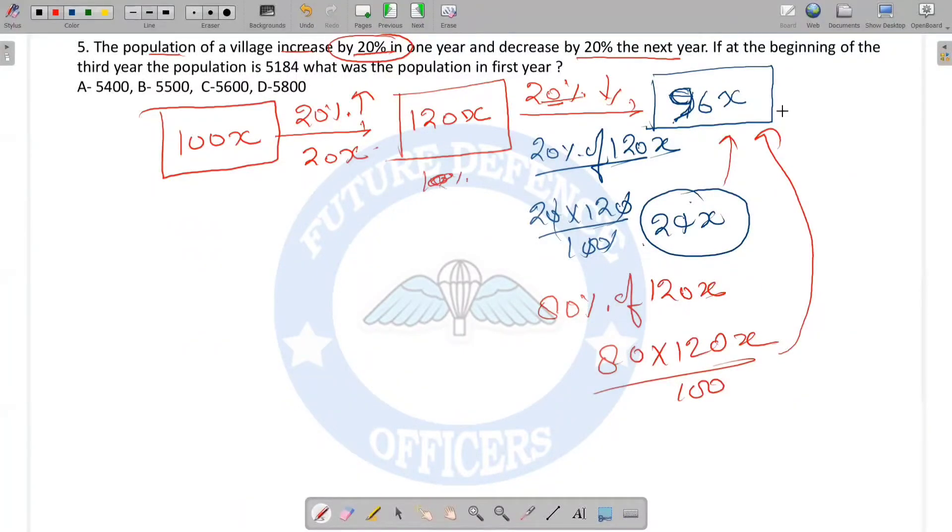In our calculation, the third year population is 96x. The question tells us the population at the start of the third year is 5184. Let's make them equal: 96x equals 5184. So x equals 5184 divided by 96.